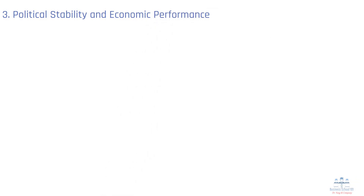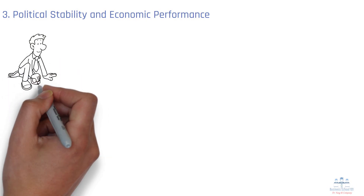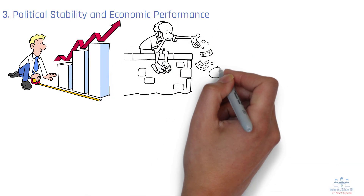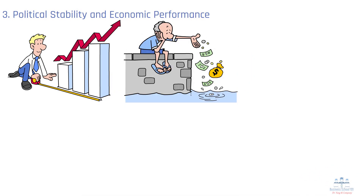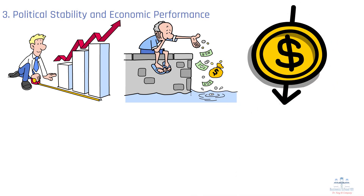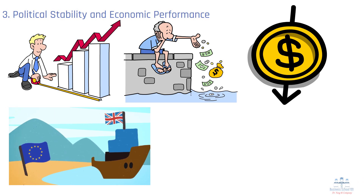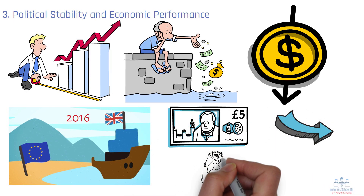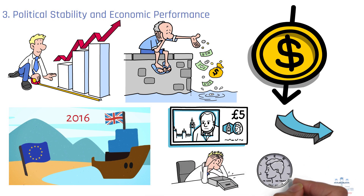Investors are less likely to hold pesos if they expect its purchasing power to decline rapidly. Number 3: Political Stability. Investors prefer to put their money into stable economies with reliable legal systems and healthy growth prospects. When a country experiences political instability, such as elections, civil unrest, or economic crises, its currency tends to lose value as investors look for safer places to invest their money. For example, during the 2016 Brexit referendum in the UK, uncertainty surrounding the economic implications of leaving the European Union caused the British pound to plummet. Investors feared that the British economy would suffer, so they pulled their money out of the UK, weakening the pound against other major currencies like the US dollar and the euro.